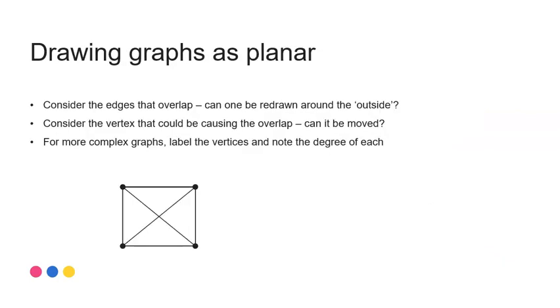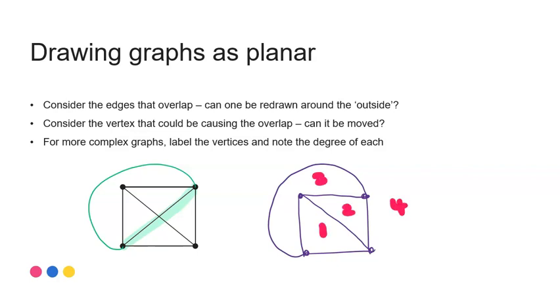So when I need to redraw my graph, things to consider. Look at any edge that overlaps. So here we can see we've got these two edges that are overlapping in the centre. So is it possible just to take one of those edges, potentially this diagonal here and redraw that edge around the outside of the graph. And so therefore by doing that, I've actually been able to reconstruct my graph still with all of the same information that the original graph contained. That's very important. You need to have all of the same connections still being shown.